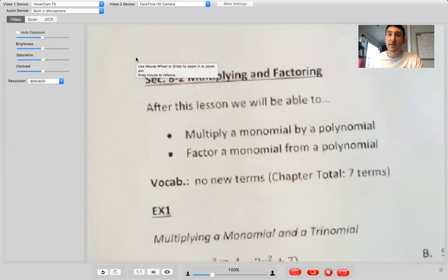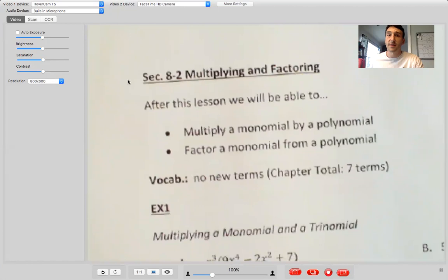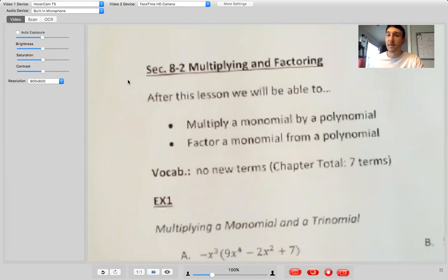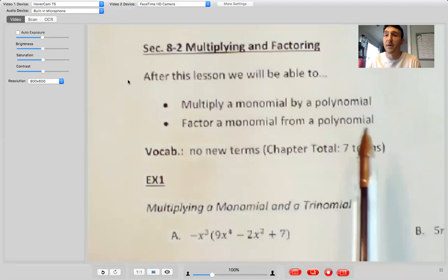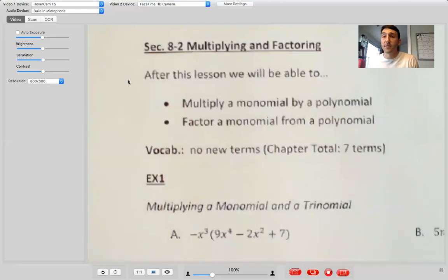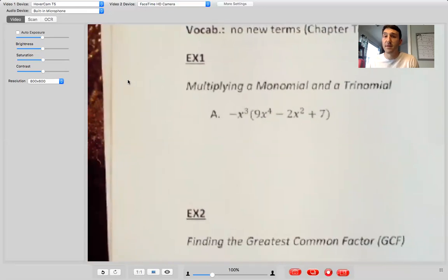Okay, so our first assignment is gonna be from section 8-2. We did 8-1 before we left and now we're gonna just hit the ground running. So as you can see it's called multiplying and factoring, but more importantly the learning targets are be able to multiply monomial by a polynomial. Remember monomial is one term, polynomial two or more terms, and then factor a monomial from a polynomial. So two main things that we are gonna focus on and with that we'll just go ahead and get right to it.